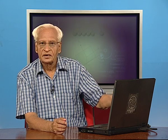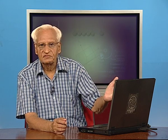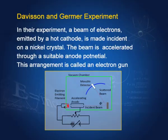We have this apparatus here. There is an electron-emitting filament or electron gun, an anode which accelerates these electrons, a crystal on which the electrons are incident, and a detector which can move on a circular arc. That is the arrangement.